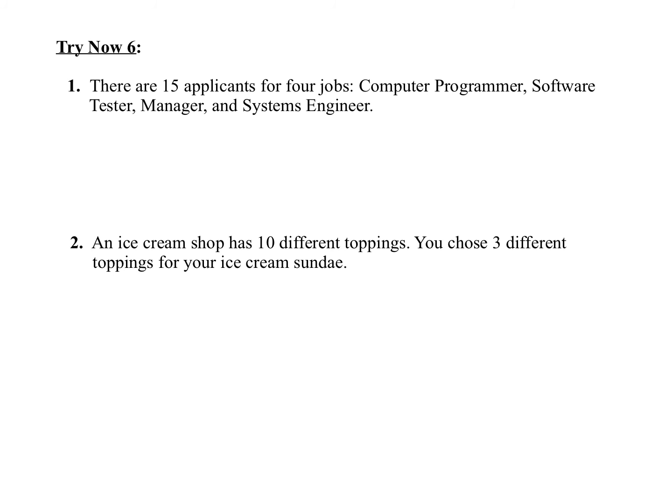Let's actually talk through these two. So for the first one, number one, there's 15 applicants for four jobs. And these four jobs are unique. There's a computer programmer, a software tester, a manager, and a systems engineer. So because those are unique positions, we need to use a permutation to solve the problem. There are 15 applicants, so N is 15, 15 total people, and we're assigning four of them to unique jobs. So 15P4, you can put that into a graphing calculator, and you'll end up with an answer of 32,760.